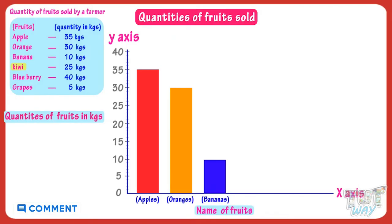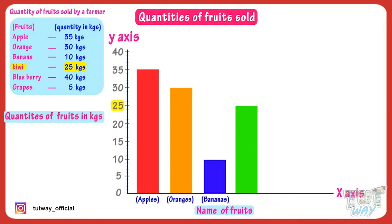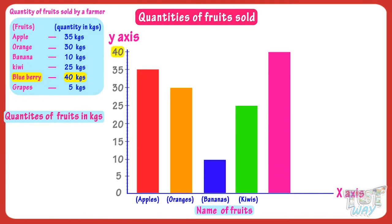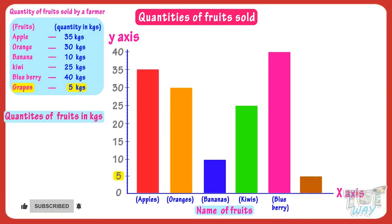Next fruit is kiwi. The quantity sold is 25 kgs, so make a rectangular bar up to the mark of 25 and label it with kiwi. Next fruit is blueberry. Its quantity sold is 40 kgs, so make a rectangular bar up to the mark of 40 and label it with blueberry. Next fruit is grapes and the quantity sold is 5 kgs, so make a rectangular bar up to the mark of 5 and label it with grapes.